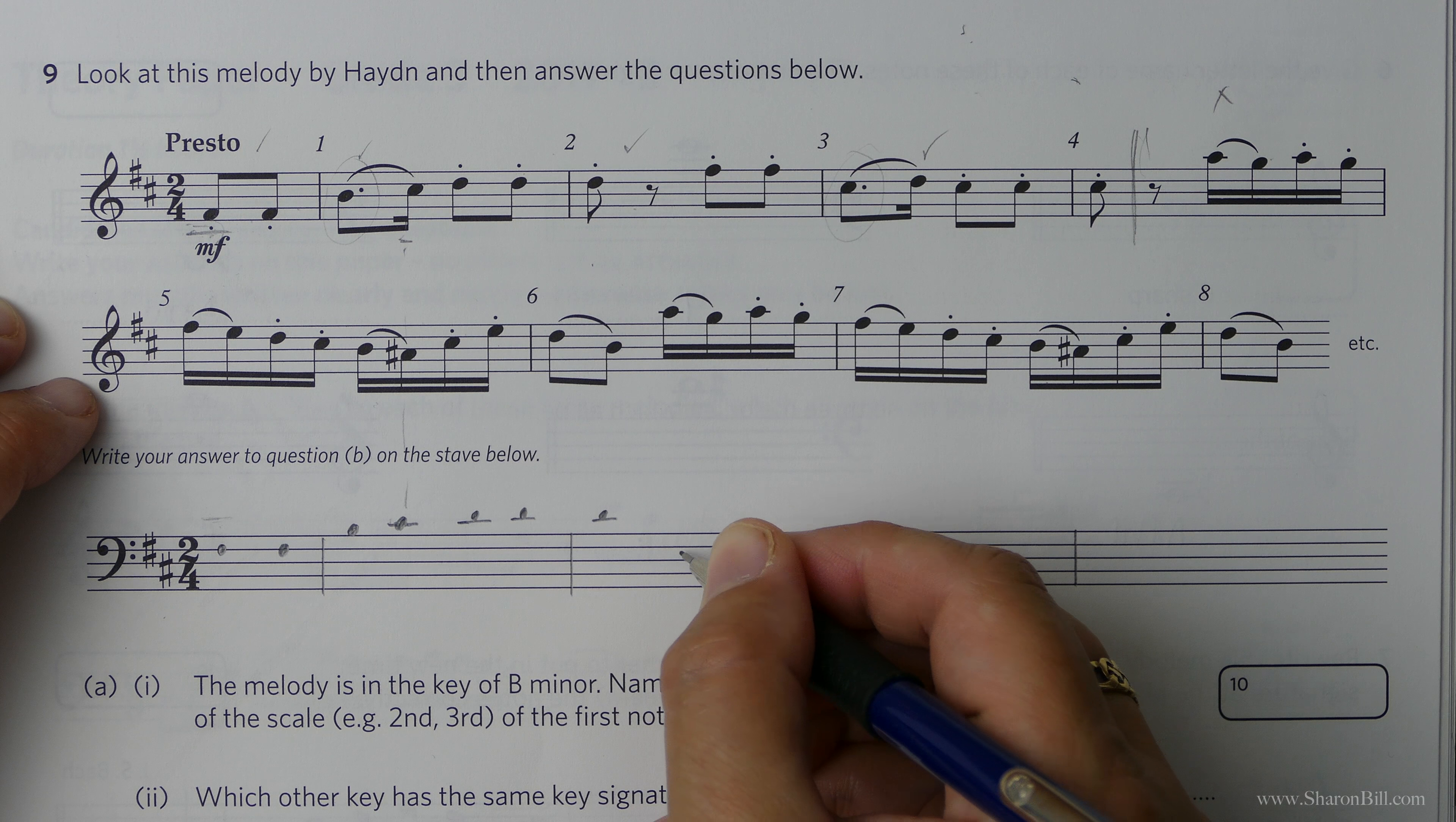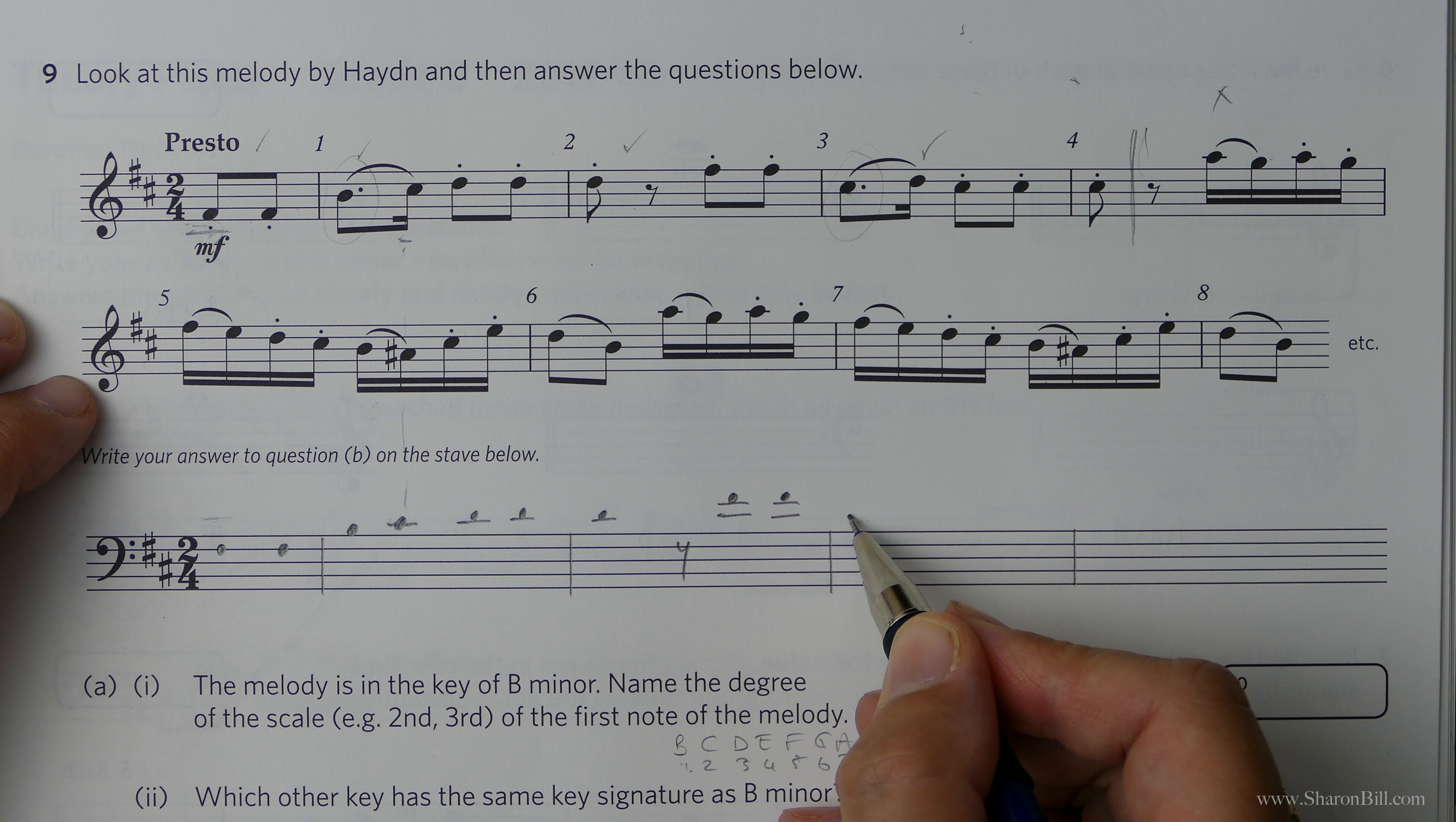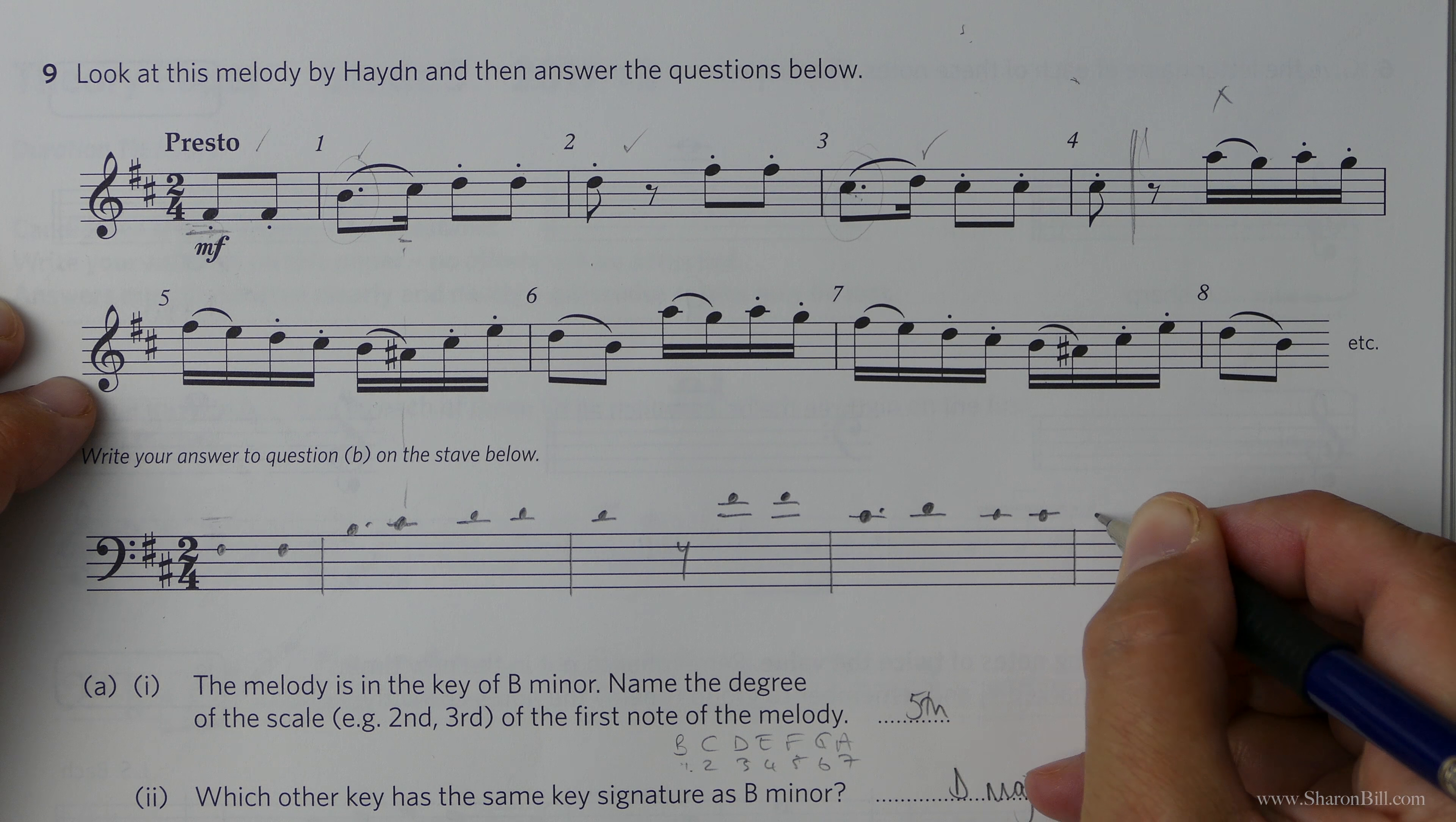Same note. Rest. Might as well pop that in. And then up one, two, third. So we're going to need another ledger line. Drop down one, three, four. That should take us back to the middle C here, which it does. So we know we've not gone wrong. Up a step. I could put the dot there while I'm at it. Back down a step. Middle C again. To finish.